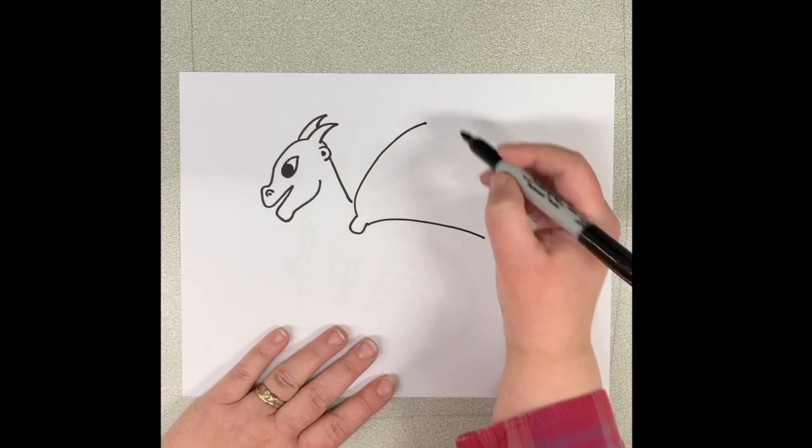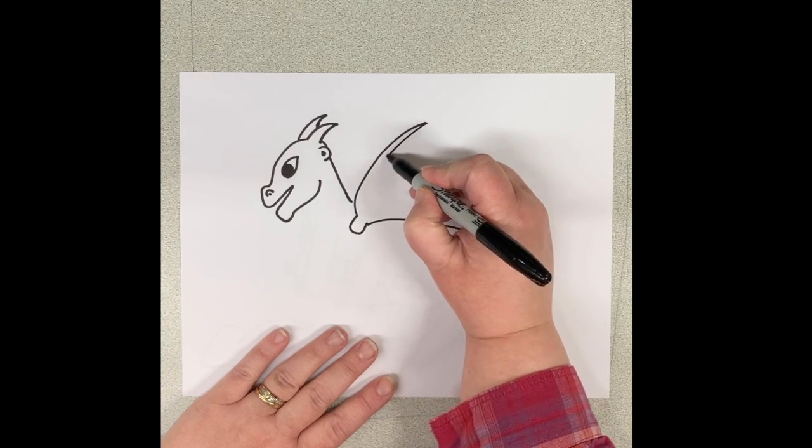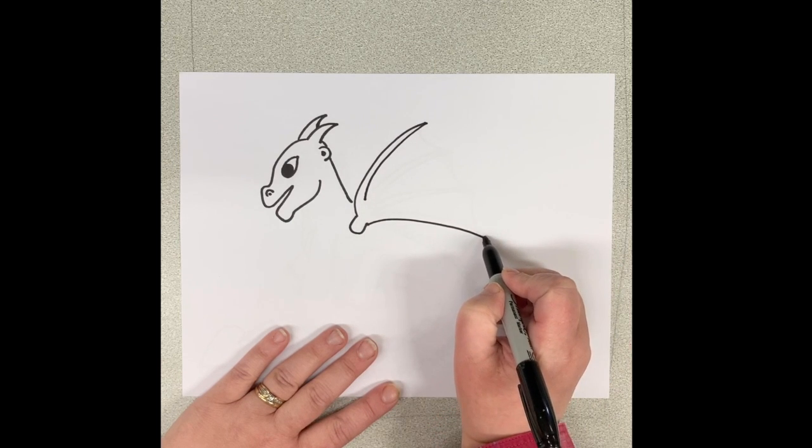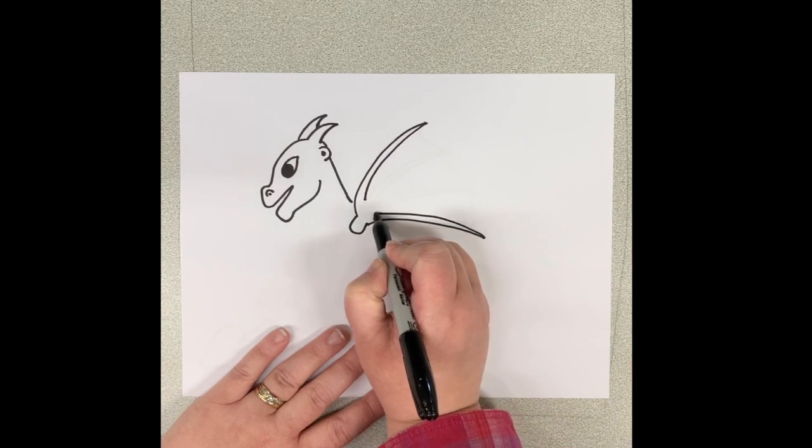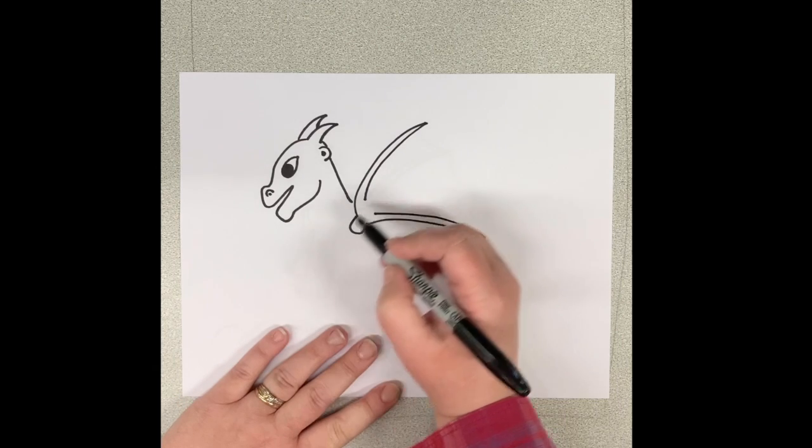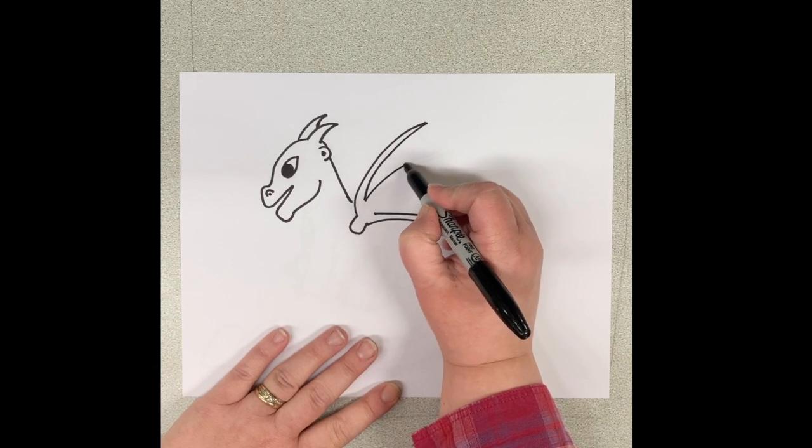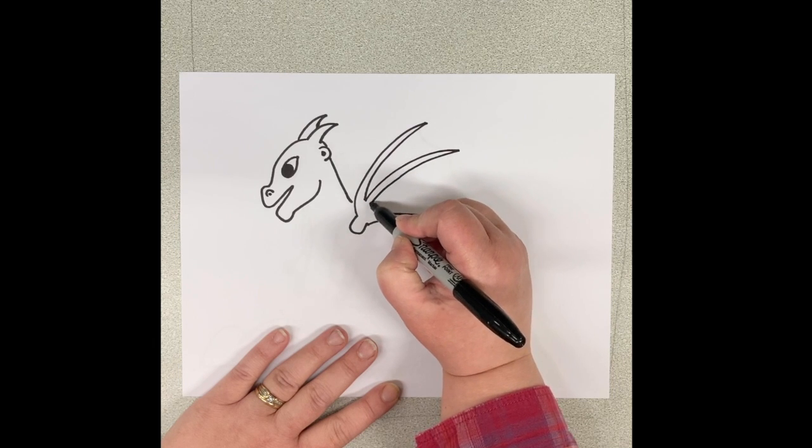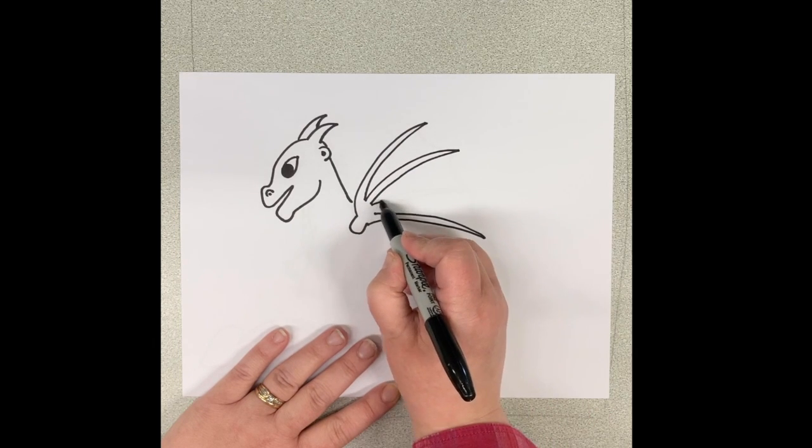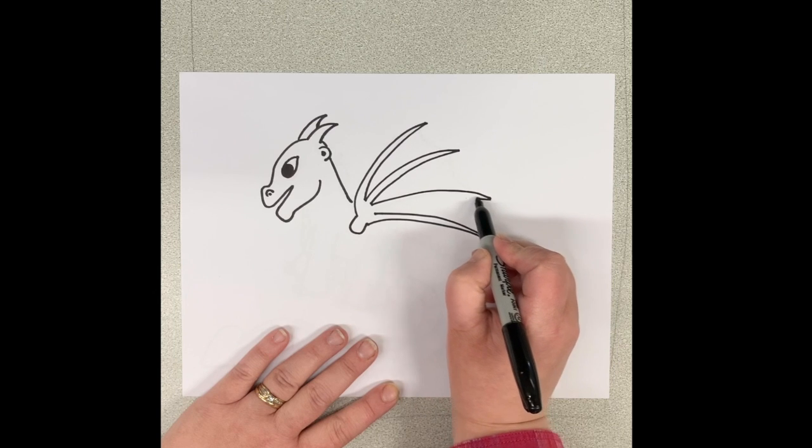So this dragon's wing is going to look a lot like the bats that we drew in the fall. So we're drawing these long shapes that are like his fingers. And we're going to have four of them all together. So they should be very long and very skinny, kind of like finger bones.